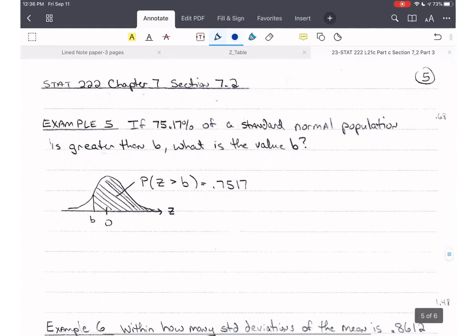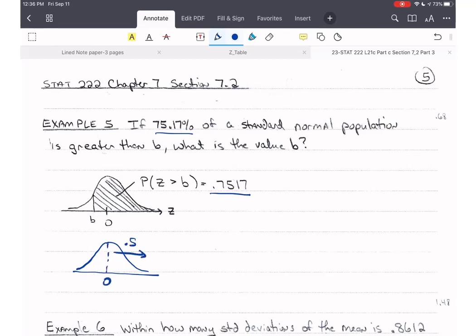Now, what if I'm given the probability greater than some value? And here I've done it differently. I've given you percentage. So if 75.17% of a standard normal population is greater than B, what is the value of B? So they have values that are greater than B. So now this again is, this is going to be confusing to you maybe the first time. So please try to follow what I'm talking about.